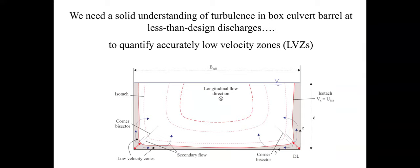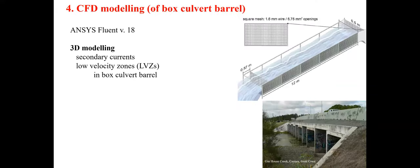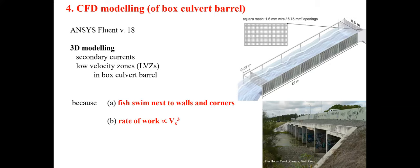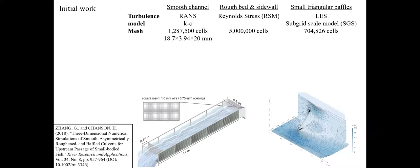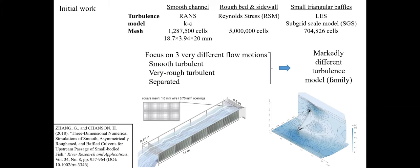So fish swim mainly in the bottom corners. We need a clear understanding of turbulence in box culvert barrels, in particular at less-than-design discharge. This was undertaken using CFD modeling, because fish swim next to the wall and bottom corners, and the energy a fish must exert to thrust itself against the flow is proportional to the cube of the velocity. Initial work was done with different types of boundaries and different turbulence models, showing the need for markedly different turbulence models depending upon the turbulence regime.